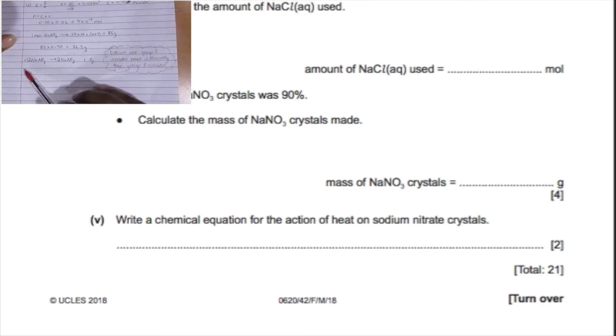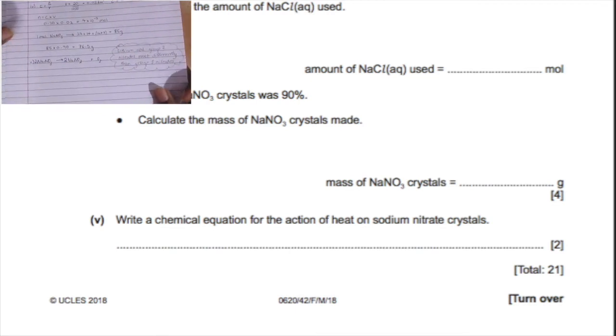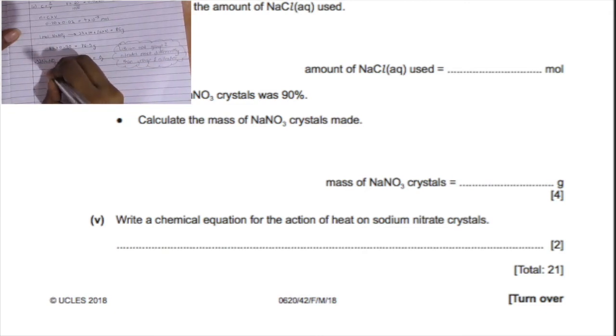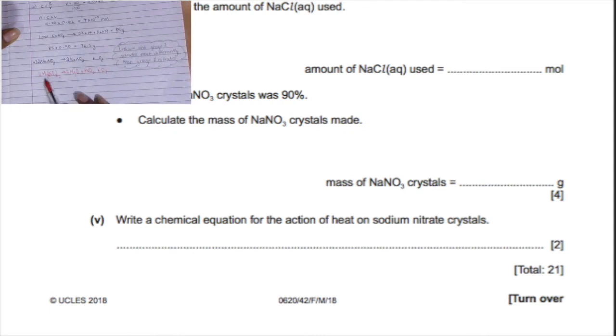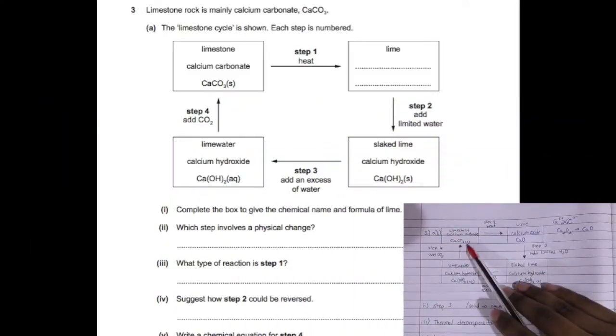Now we need to show the chemical equation for the action of heat on sodium nitrate crystals. That would be sodium nitrate gives you sodium nitrite plus oxygen. Lithium and group 2 metals or their nitrates do not react like this, they're different from group 1 elements. For example, magnesium nitrate, if you thermally decompose it, will give you magnesium oxide plus nitrogen dioxide and oxygen. Make sure to balance it out. We have two magnesiums on each side, four nitrogens on each side, and six oxygens on both the left and right hand side.